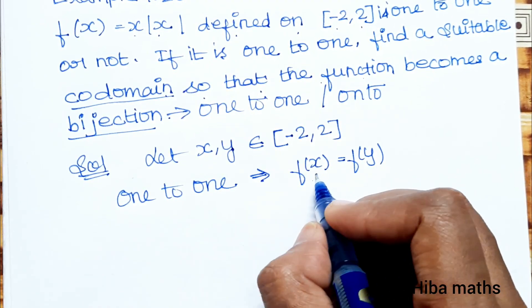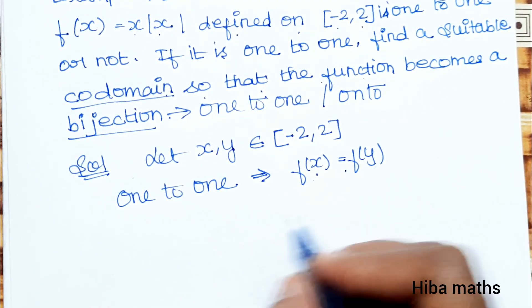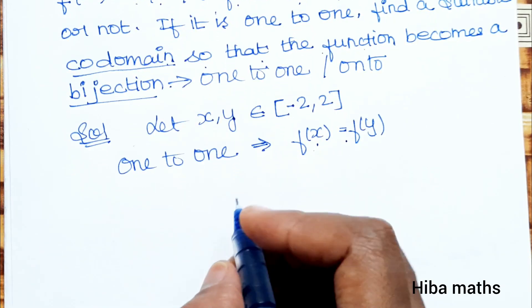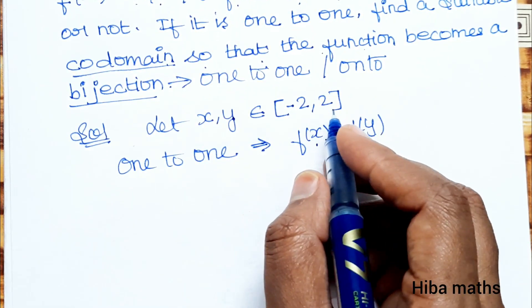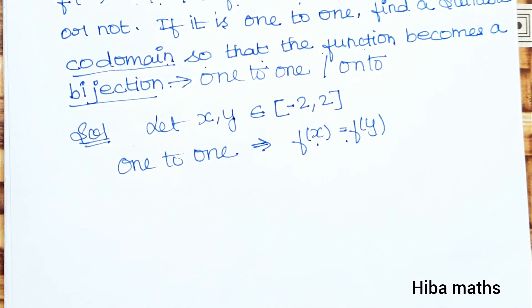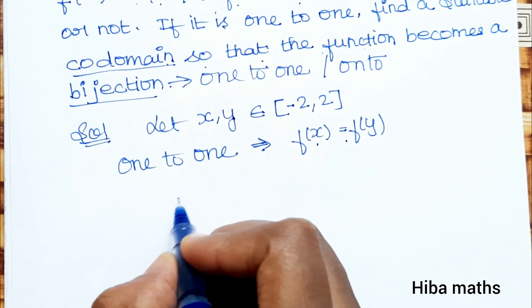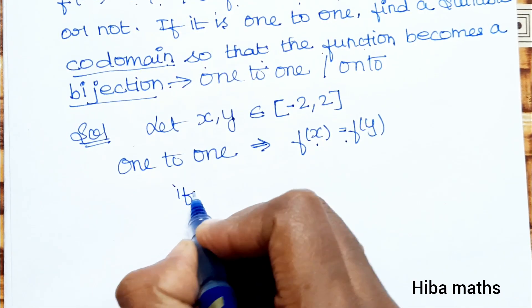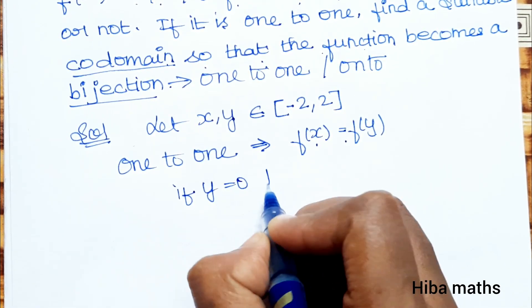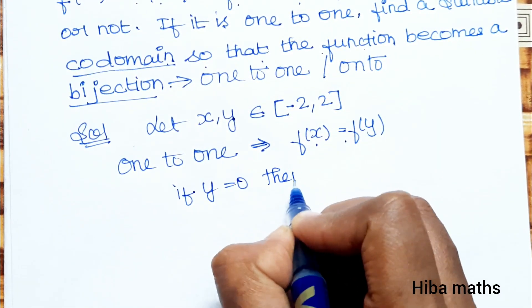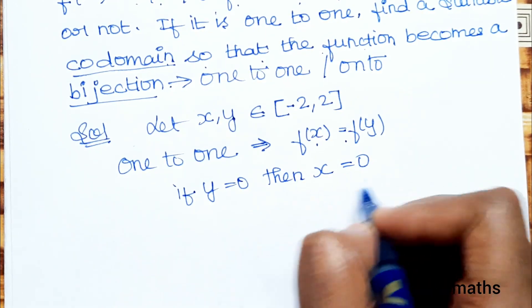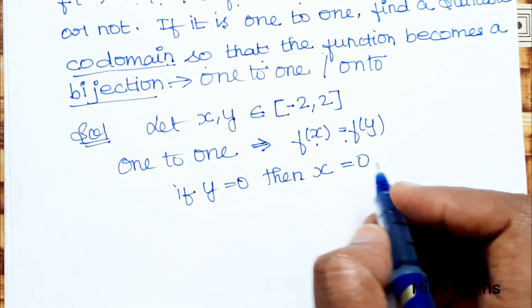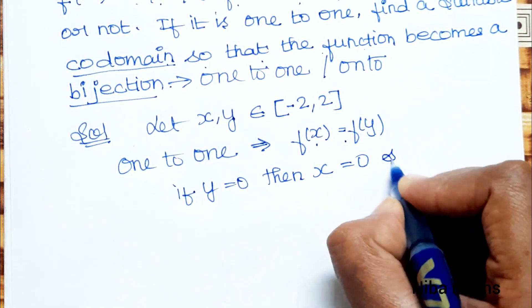f(x) = f(y). But 0 is a special case — as mentioned in the book, if y is equal to 0, then x is also 0. This case is possible and straightforward.